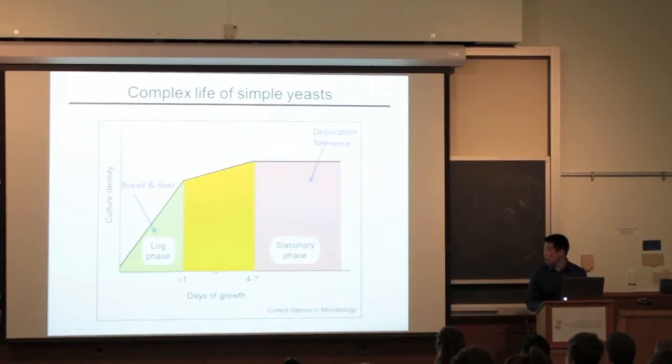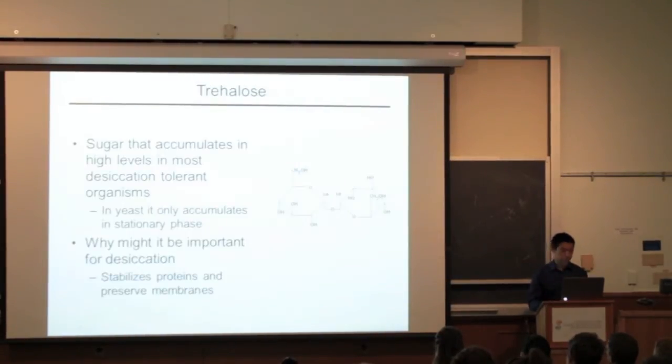One such molecule that fits this criteria is called trehalose. Trehalose is a sugar, more specifically a disaccharide made of two glucose molecules. It has been shown to accumulate in high levels in most desiccation tolerant organisms. And in yeast, it only accumulates in the stationary phase.